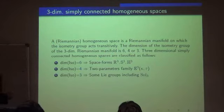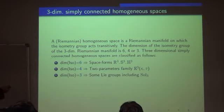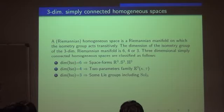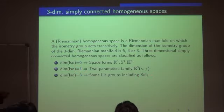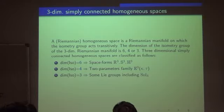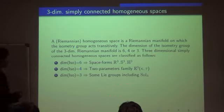What are simply connected homogeneous spaces? The metric is classified by the dimension of the isometry group. When the dimension is 6, they are space forms — translations give three dimensions and rotations give three more. When dimension is 4, there are two-parameter families with parameters kappa and tau. When dimension is 3, it's called Sol geometry. In the dimension-4 case, translation gives three dimensions and rotation with respect to the vertical direction gives one more.